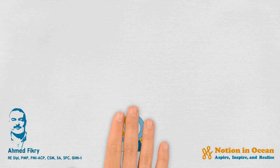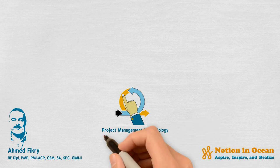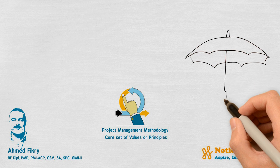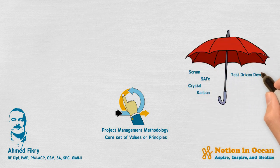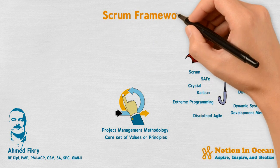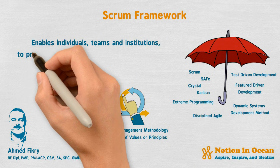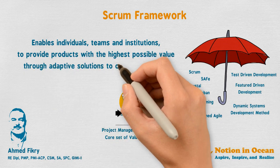The difference between Agile and Scrum is that while Agile is a project management methodology that uses a core set of values or principles, we can say that it is an umbrella under which we have different frameworks. As we can see, one of which is Scrum, which is the most known and used framework that enables individuals, teams, and institutions to provide products with the highest possible value through adaptive solutions to complex problems.